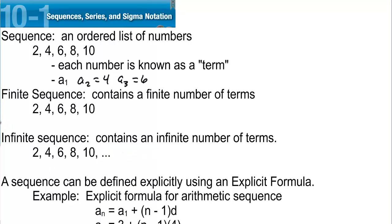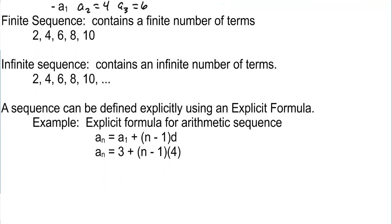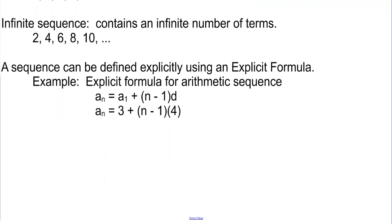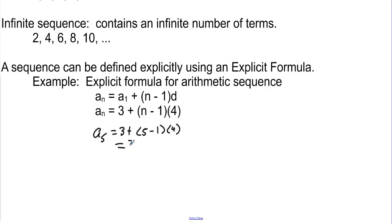A sequence can be explicitly defined using an explicit formula. An example is the explicit formula for an arithmetic sequence: A sub n equals A sub 1 plus (n minus 1)d. It's a rule to find any term you want. We could find the fifth term by plugging 5 in for n, so we'd have 3 plus 16 — the fifth term would be 19.